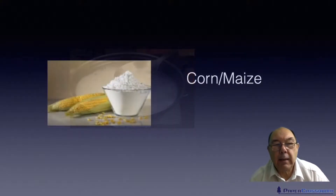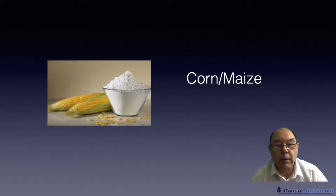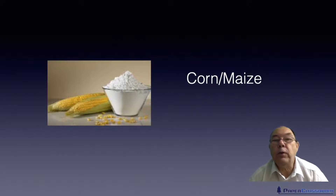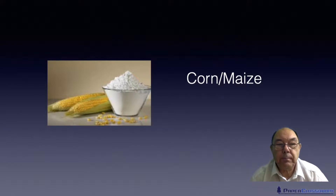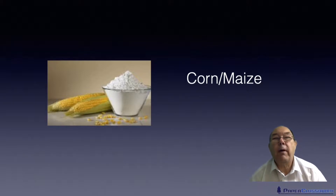When paper making came to the West — to Europe and North America — by then they discovered that starch was really good for improving the strength of paper. You can either use what we call unmodified starch, raw starch, or native starch, which just means that you extract the starch from the plant and use it as it is. But that starch has no particular affinity for cellulose, or you can chemically modify the starch.